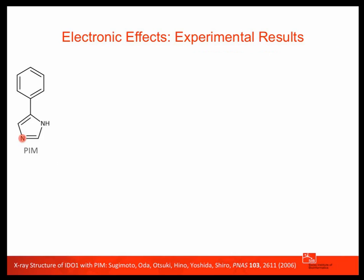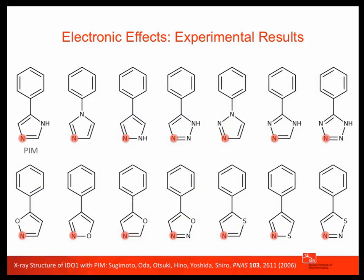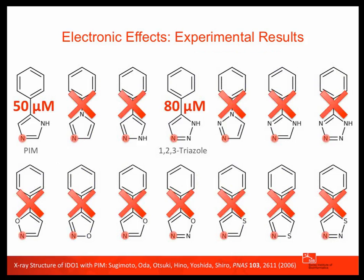4-phenyl imidazole, or PIM, is a classic IDO1 inhibitor co-crystallized with the enzyme in 2006. The nitrogen atom marked in red actually binds to the iron in the heme. Over the years, many people have tried every possible bioisosteric replacement of this ring. All these compounds have exactly the same shape and the nitrogen in the right position to bind to the iron. But experimentally, almost all of them are inactive — only the imidazole and the triazole are active — showing that subtle electronic effects are very important for good IDO1 inhibitors.